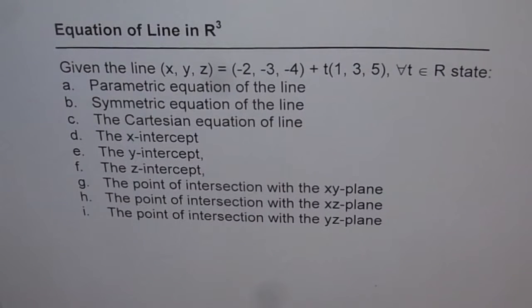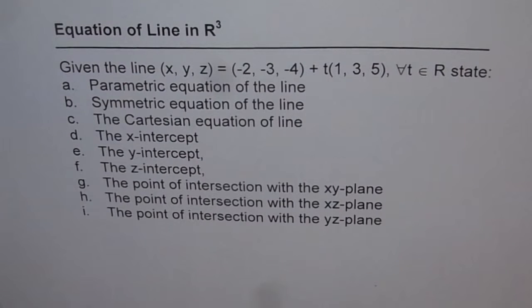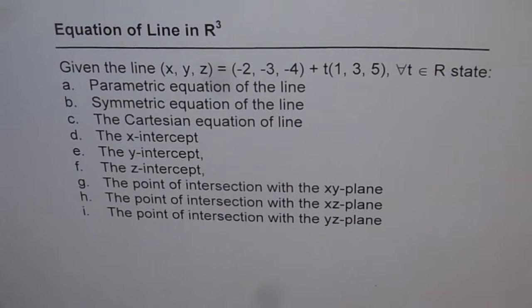Here is a knowledge-based question about equation of a line in R3. The equation is (x, y, z) = (-2, -3, -4) + t(1, 3, 5), for every t belonging to the real numbers.